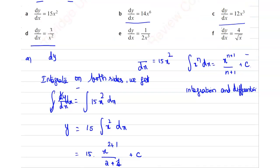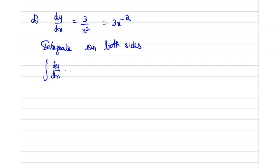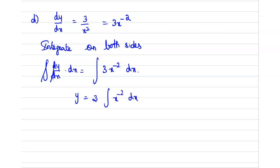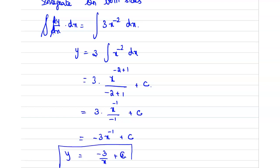Part d is dy/dx equals 3 divided by x squared, which can be written as 3x power minus 2. Integrating both sides, y equals 3 times integral of x power minus 2 dx, which equals 3 times x power minus 1 divided by minus 1, plus c, which equals minus 3 divided by x, plus c. Therefore y equals minus 3 over x plus c.